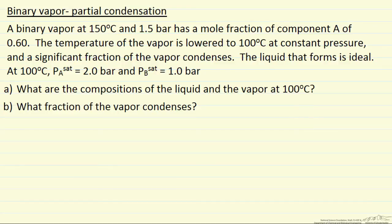Here we have a binary vapor that's at 150 degrees C and 1.5 bar, and the mole fraction of component A is 0.6. So what we're going to do is lower the temperature to 100 degrees C, keeping the pressure constant, and we find that a significant fraction of the vapor condenses.